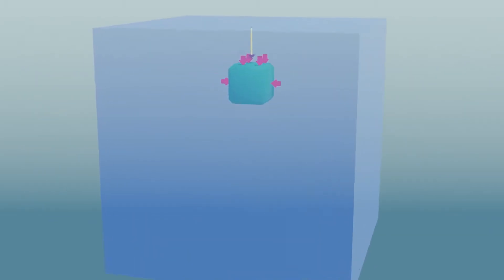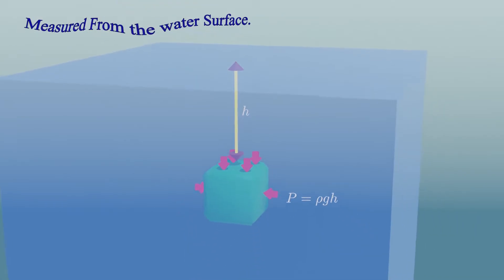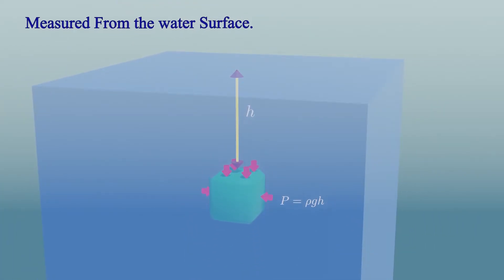The one that acts on static fluid is the real pressure, which is given by P equals rho g h. This pressure is measured from the water surface and increases with fluid depth.